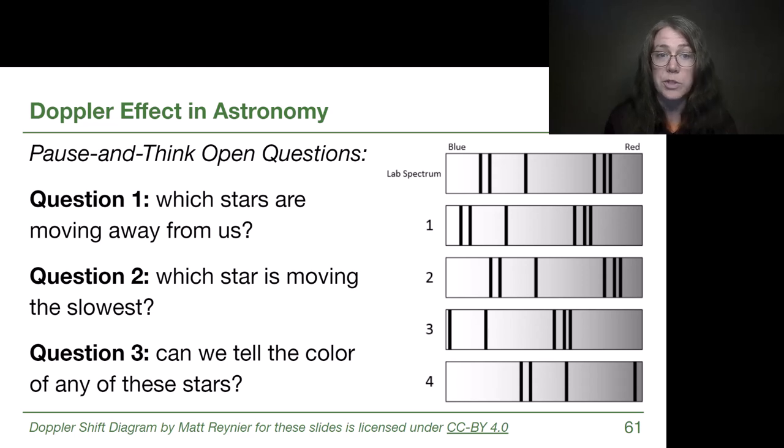All right, so for our first question, which stars are moving away from us? Away means red shifted, so we have to look at patterns that seem to be shifted to the right side, because that's where red is labeled. So star two is shifted a little bit to the right, that's moving away from us, and star four is shifted a whole bunch to the right, so much so that we've actually lost a couple of the spectral lines. They're now in infrared instead of visible light red frequencies. So stars two and four are moving away from us.